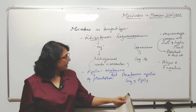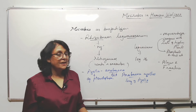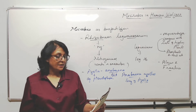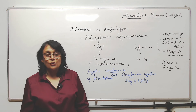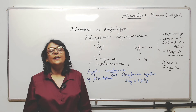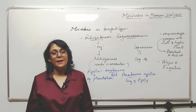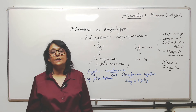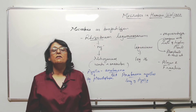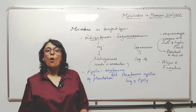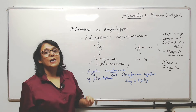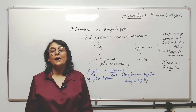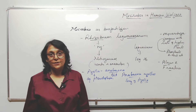Cyanobacteria such as Anabaena, Nostoc, and Oscillatoria also help in increasing soil fertility. So these are all microbes which can be used as biofertilizers.